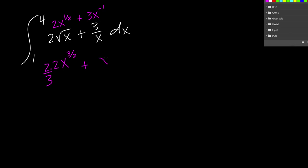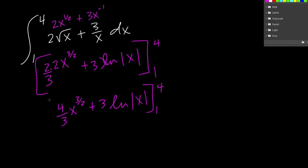We raise it by 1. Or, oh, so if it's like this. Sorry. This is a special case. It's going to be 3 natural log absolute value of x. Now we evaluate this entire thing from 1 to 4. I'm going to simplify this just a little bit. So we get 4 thirds x to the 3 halves plus 3 natural log of the absolute value of x evaluated from 1 to 4.